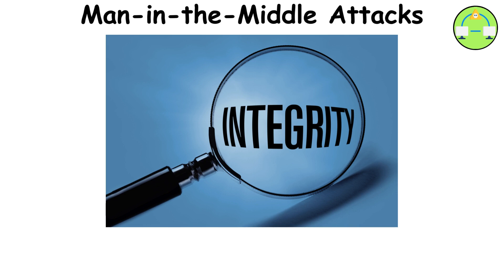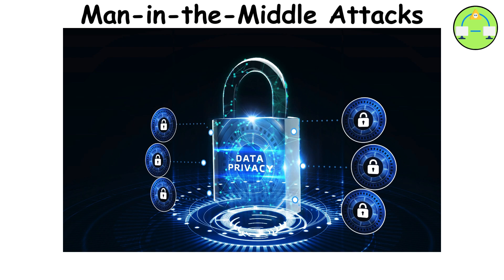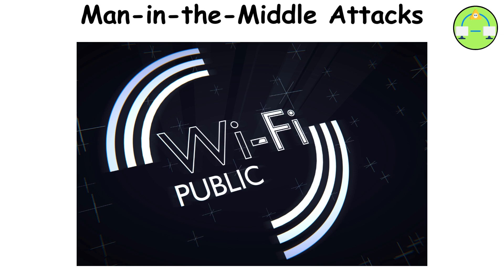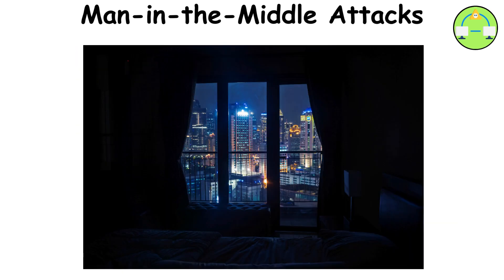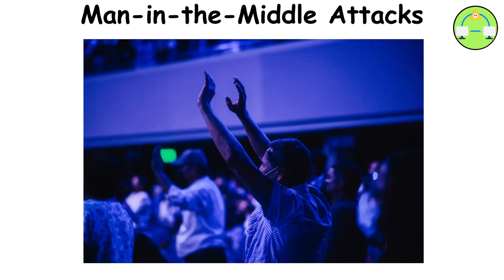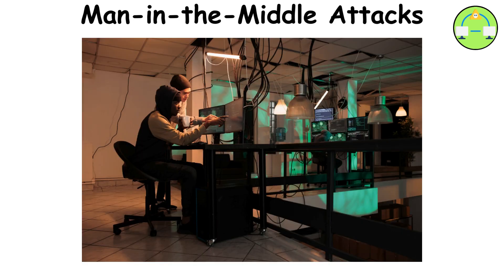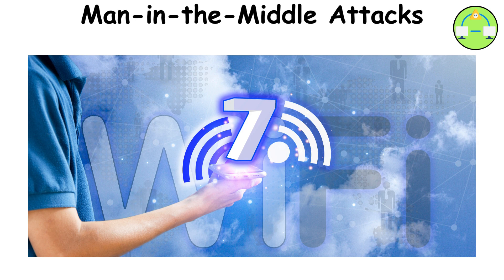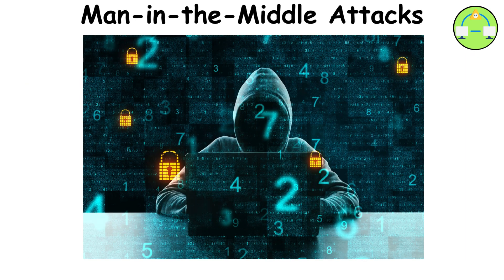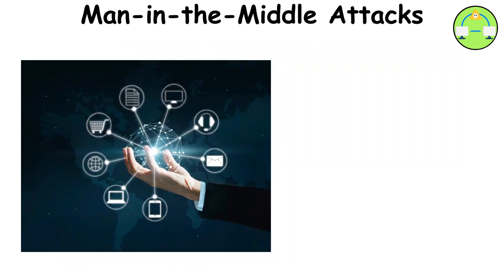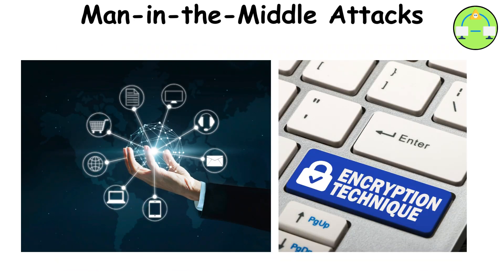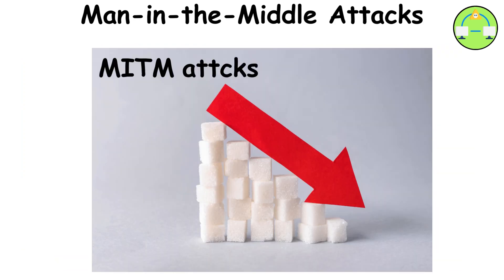These assaults pose a serious risk to data integrity and privacy since they can happen in a variety of settings, including public Wi-Fi networks and infected devices. One example is the Dark Hotel campaign, in which prominent people were targeted by cybercriminals who used hotel Wi-Fi connections to intercept and distribute malware-laden updates passed off as genuine software upgrades. Secure communication channels and encryption techniques can help reduce the impact of MITM attacks.